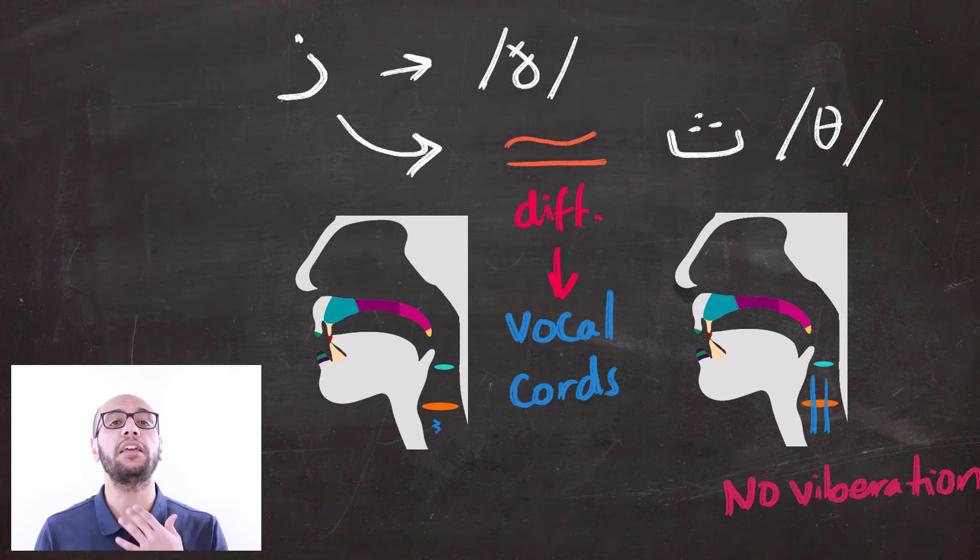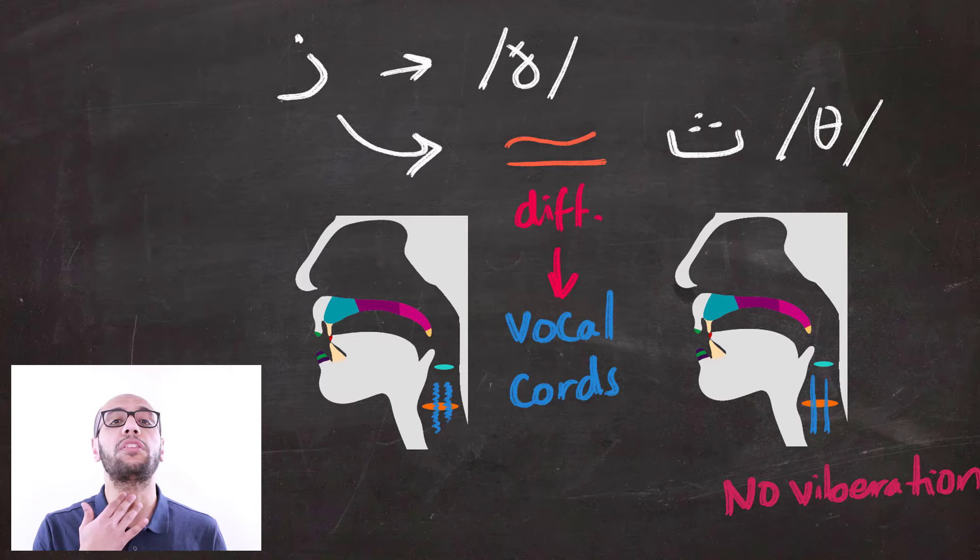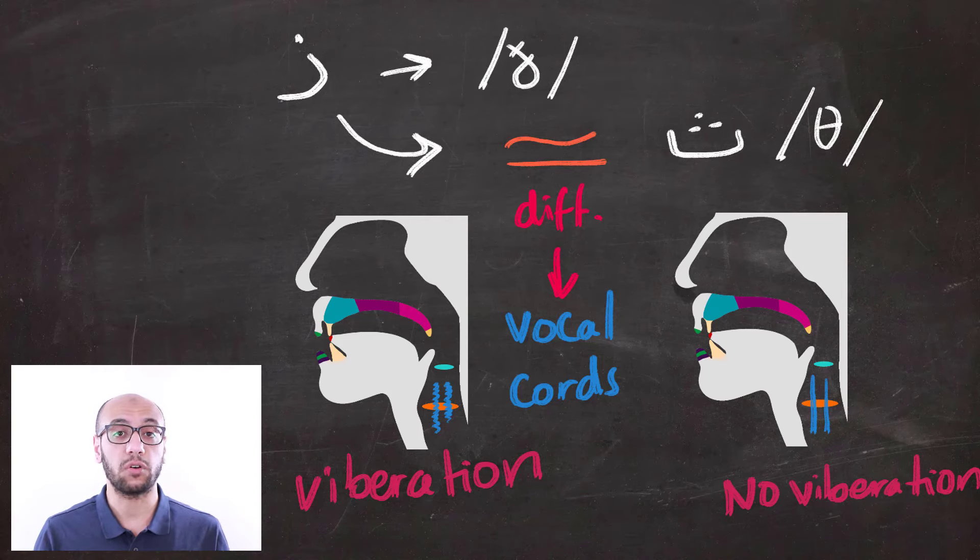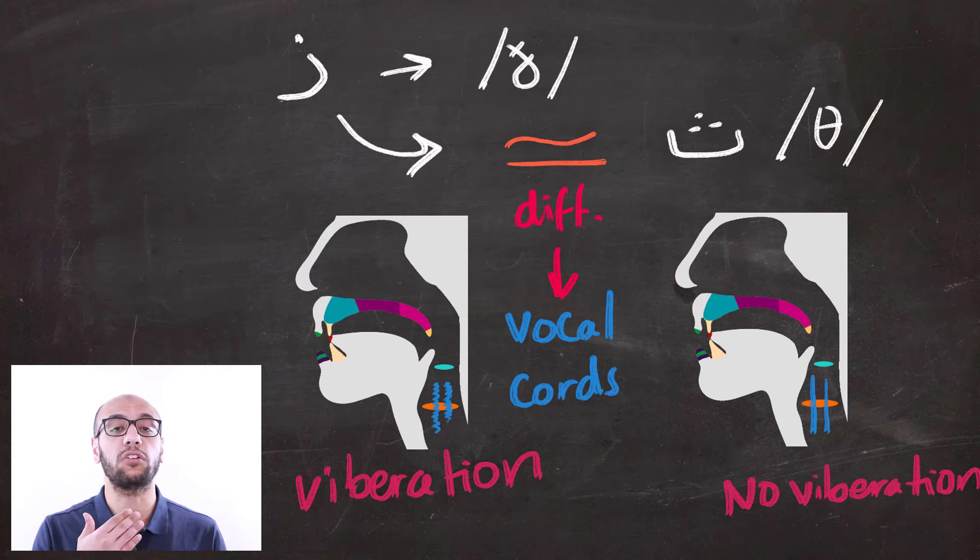So, while saying th, you can't feel any vibration here when you put your fingers on your throat. On the other side, when you pronounce th, you can feel some vibration, and that's what makes th a voiced sound. So, th is voiceless, th, and th is the same sound, but it is voiced with vibration at your vocal cords like so.